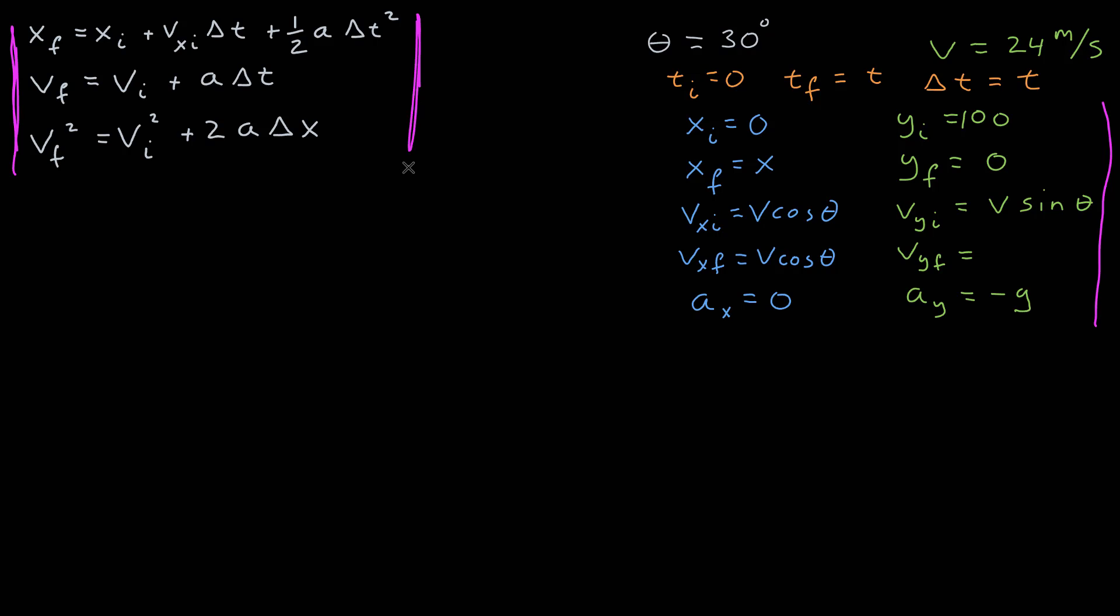So for the constant acceleration equations in y, can any of these give me the time? Well, the last one doesn't have time in it at all. And for the middle one, I don't know time, but I don't know the final y component of the velocity. But this first one, I know a, I know the initial y component of the velocity, I know the y final and y initial positions. So it looks like in the y dimension, I can use that to find time directly.